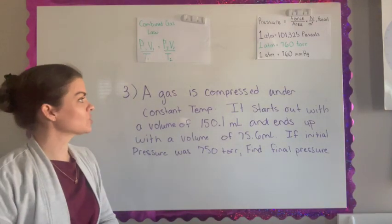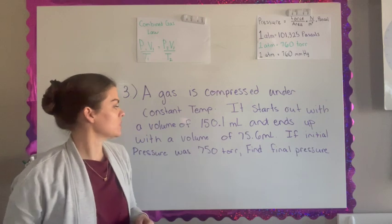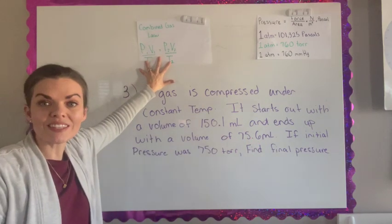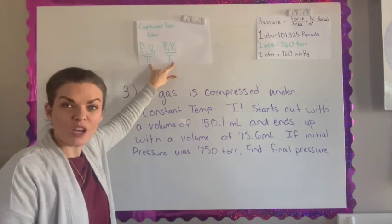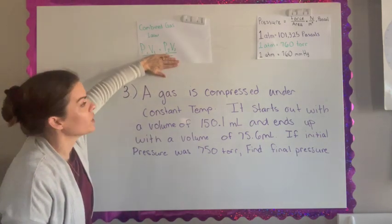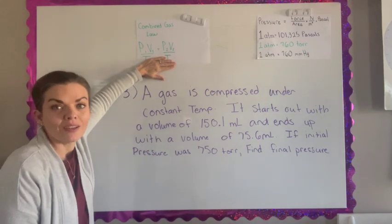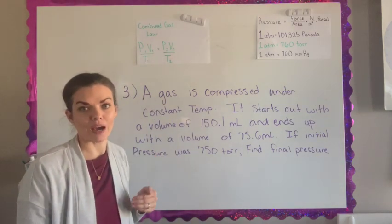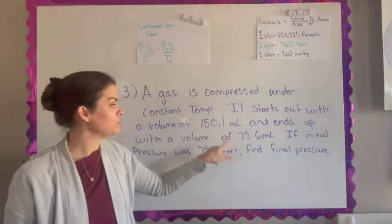Question number three tells us that a gas is compressed under constant temperature. It starts out with a volume of 150.1 milliliters, and it ends up with a volume of 75.6. So I already know that the temperature is going to stay the same. If the T is one on this side and the T is one on this side, I'm just going to look at this equation using pressure and volume and ignore the temperature part. So I'm going to be using just the P1, V1, P2, V2, and that's Boyle's law. But if you know the combined gas law, you can get what you need out of it.